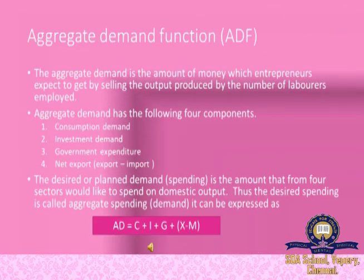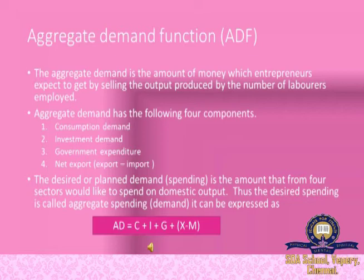Now we move on to a detailed explanation of the aggregate demand function, or ADF. In the Keynesian model, output is determined mainly by aggregate demand. Aggregate demand is the amount of money which entrepreneurs expect to get by selling the output produced by a given number of laborers — it is the expected income or revenue from the sale of output at different levels of employment. Aggregate demand has four components: consumption demand, investment demand, government expenditure, and net exports (exports minus imports).